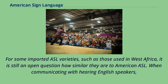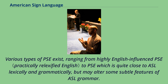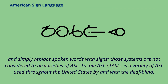When communicating with hearing English speakers, ASL speakers often use what is commonly called Pidgin Signed English or contact signing, a blend of English structure with ASL vocabulary. Various types of PSE exist, ranging from highly English-influenced PSE to PSE which is quite close to ASL lexically and grammatically, but may alter some subtle features of ASL grammar. Fingerspelling may be used more often in PSE than it is normally used in ASL. There have been some constructed sign languages, known as manually coded English, which match English grammar exactly and simply replace spoken words with signs; those systems are not considered to be varieties of ASL.